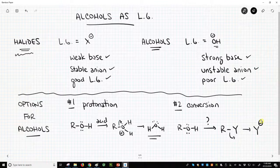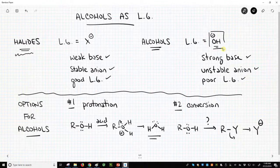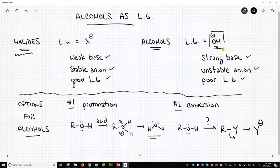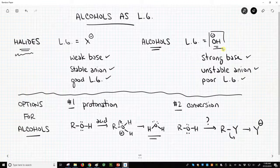our anion is more stable, at least more stable than this crazy hydroxide in the upper right. So these are our two approaches. We'll either protonate the oxygen to make it a better leaving group, or we will convert that oxygen into something else. And it could still be an oxygen, but we'll make that oxygen easier to leave or convert it to a halide. So these are our two options to this problem. How do we make an OH group into a good leaving group?